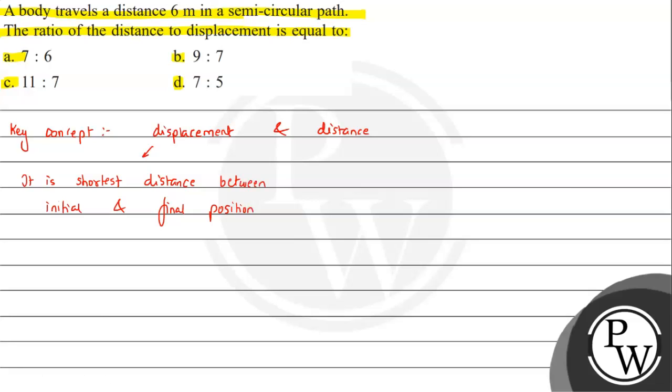So this is how displacement is defined. If we talk about distance, it is the actual path. How much the body actually travels - that is what distance is. It is the actual path length traveled.